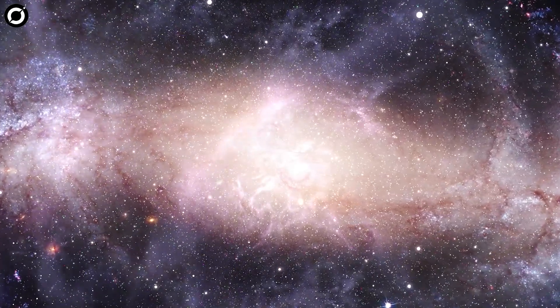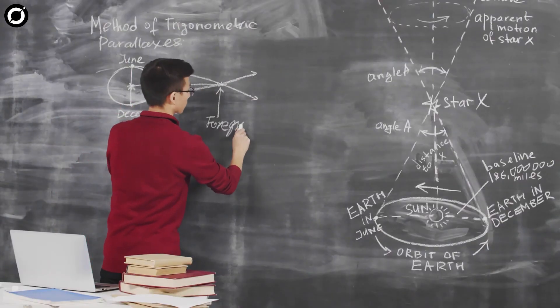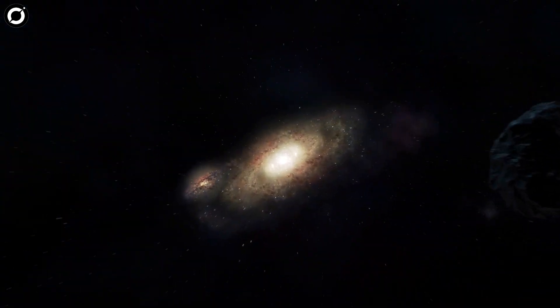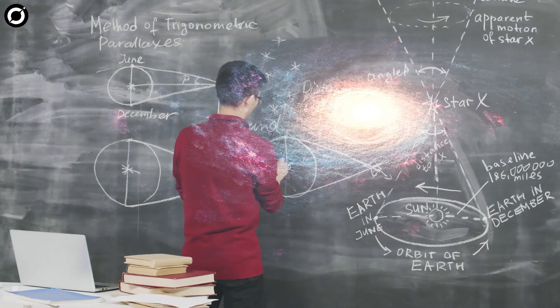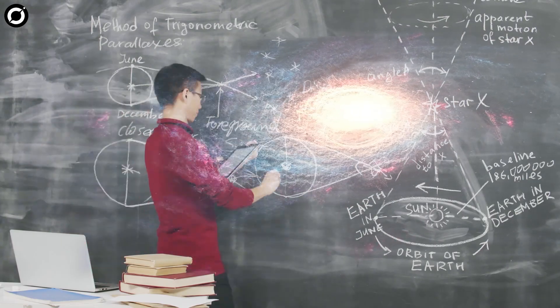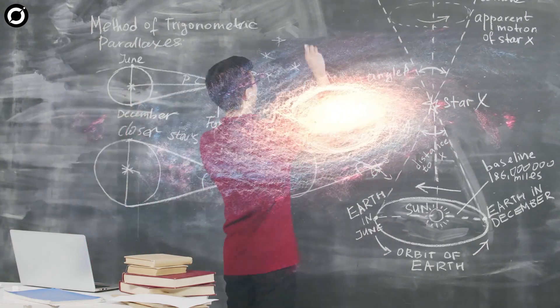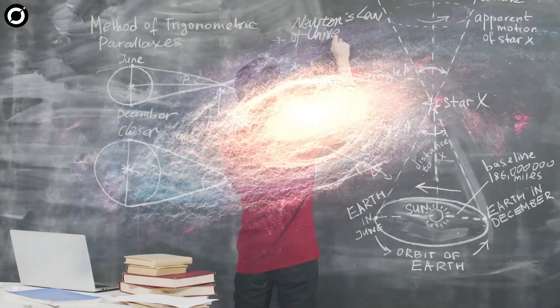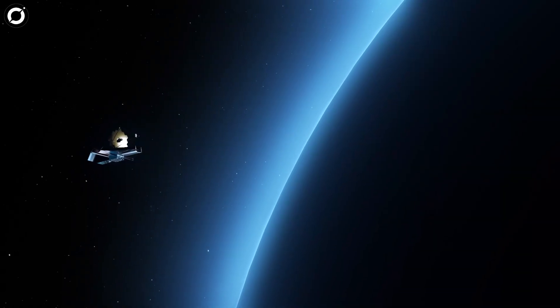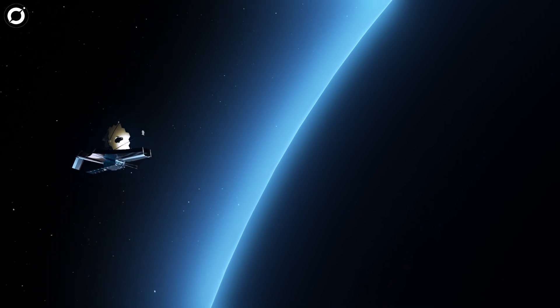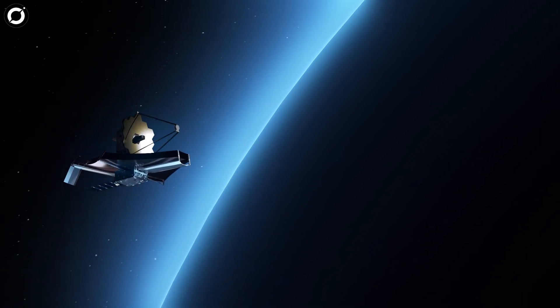When the universe was just three percent of its current age, this forces us to rethink everything we know. The galaxies are so massive that they are in tension with 99% of the models for cosmology. This means that either the models will need to be altered, or scientific understanding of galaxy formation requires a fundamental rethink. Either way, it is a shocking discovery by James Webb yet again.